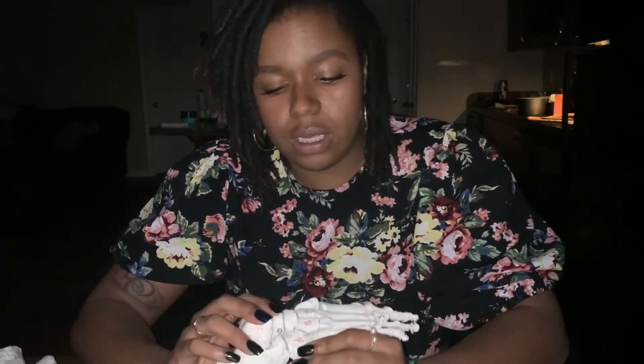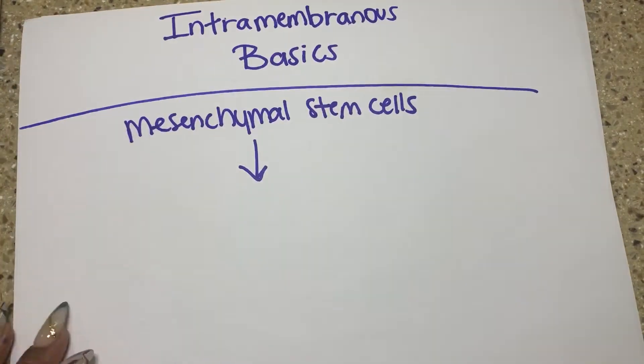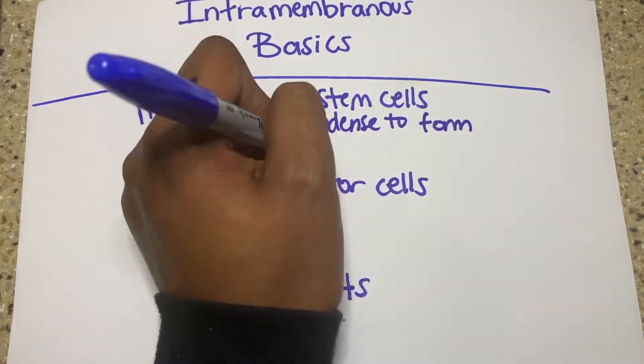Intramembranous is that friend that doesn't have a role model. Intramembranous ossification is related to our short bones and flat bones — the bones that don't have the two ends like long bones. These are more or less the bones in your feet, hands, and skull. Intramembranous ossification starts out with mesenchymal cells, which are our stem cells. They come to an area and cluster to form what we call an ossification center — that is where bone deposition starts.